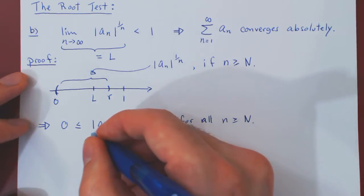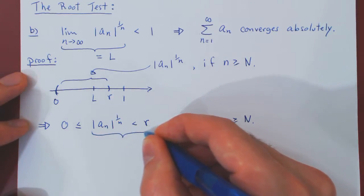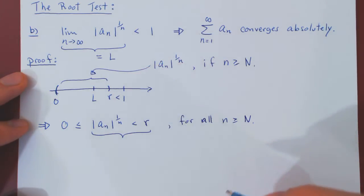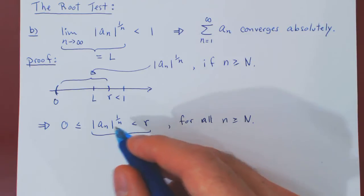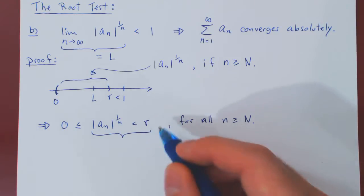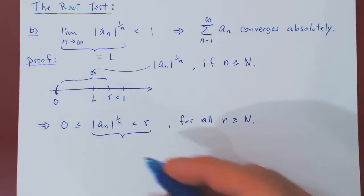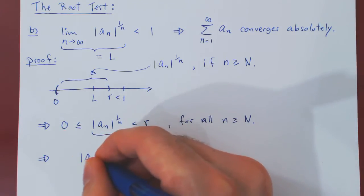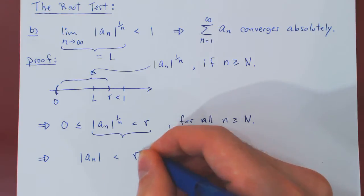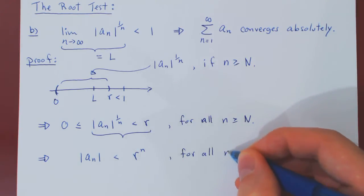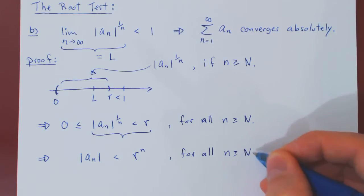The inequality here of interest is this one, keeping in mind that R is some real number that is strictly less than 1. So, we're looking at non-negative terms. If we take the nth power on both sides, this will preserve the inequality, which implies that the absolute value of a_n will be less than R^n, for all values of lowercase n larger than uppercase N.